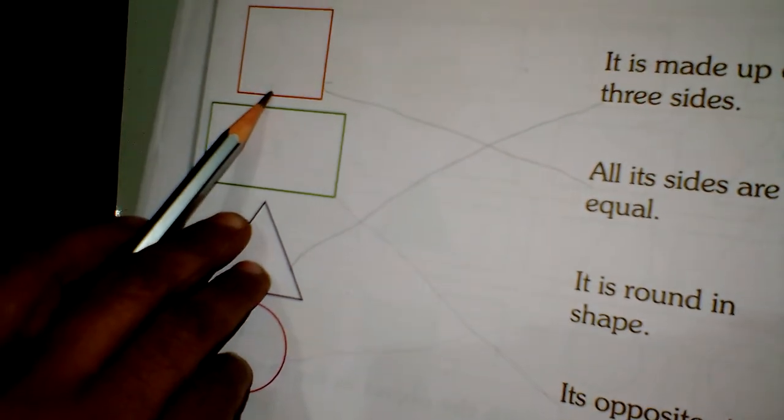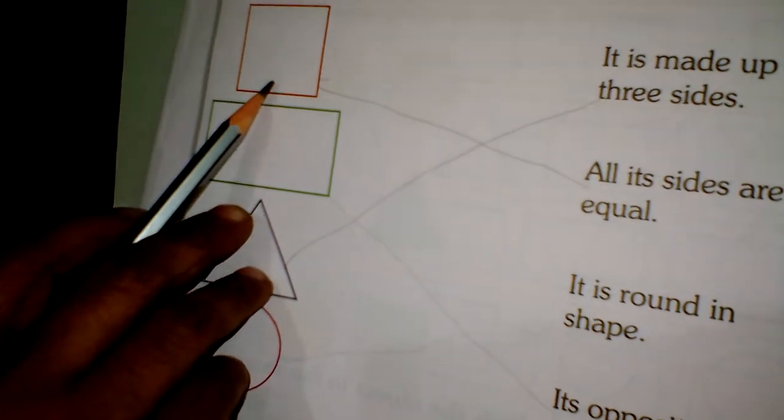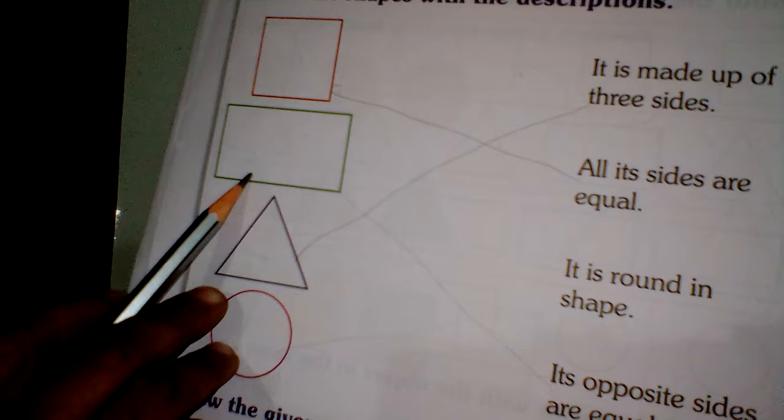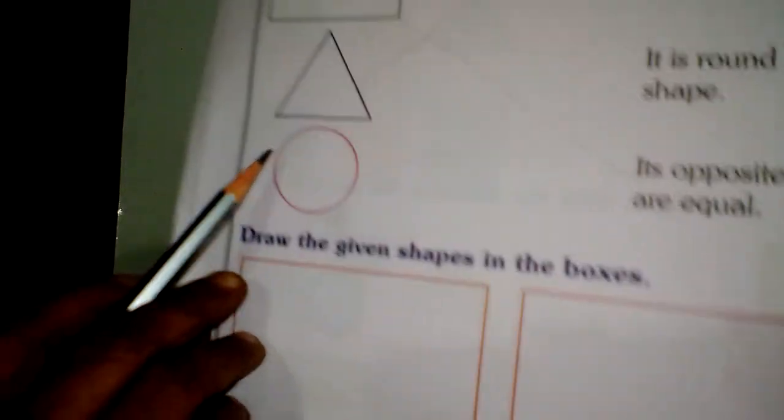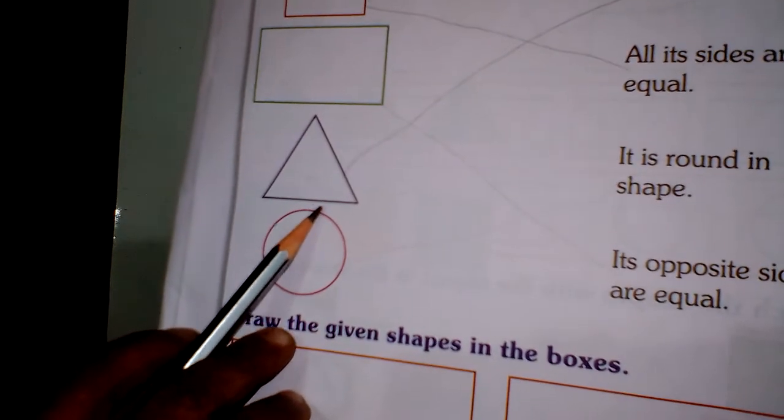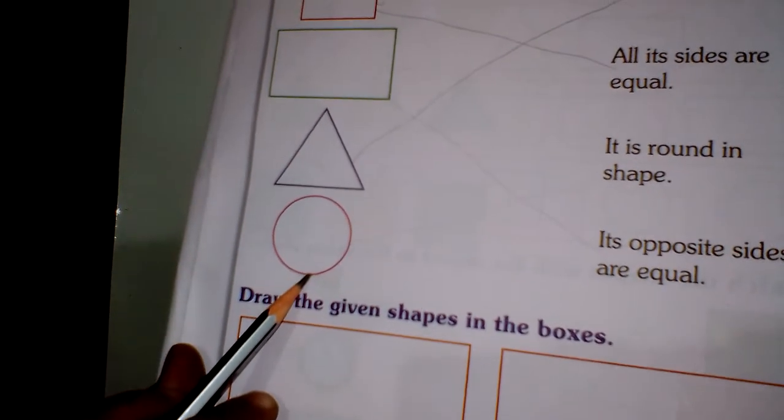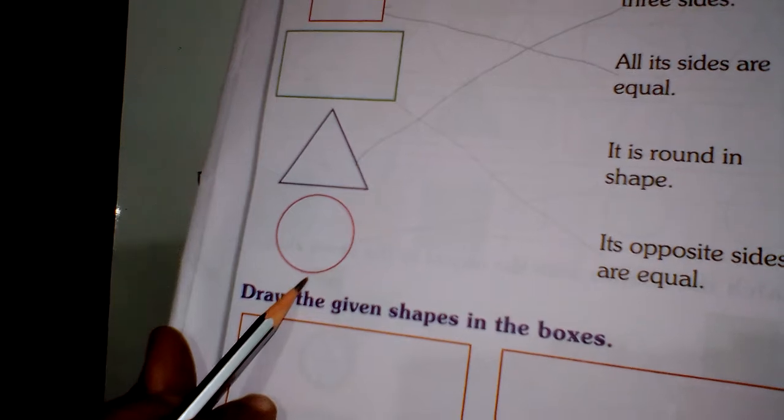This is square. All of you study the spelling also. S-Q-U-A-R-E square. Next, rectangle, R-E-C-T-A-N-G-L-E rectangle. Then triangle, T-R-I-A-N-G-L-E triangle. Next one, circle, C-I-R-C-L-E circle.